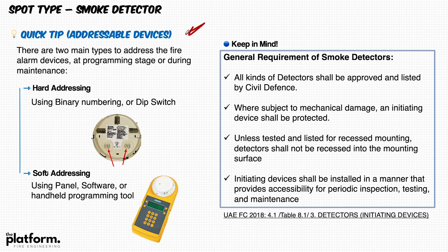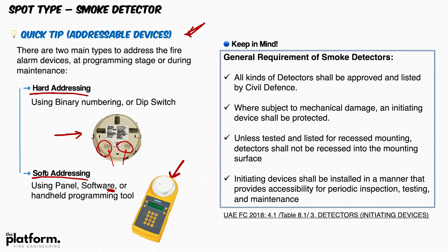A quick tip on addressable fire alarm systems: there are two main methods to address devices — hard addressing and soft addressing. Hard addressing uses a binary number or DIP switch on the detector base. Soft addressing uses a handheld programming tool or computer software. Both are encountered during design, installation, and maintenance when replacing and re-addressing devices.